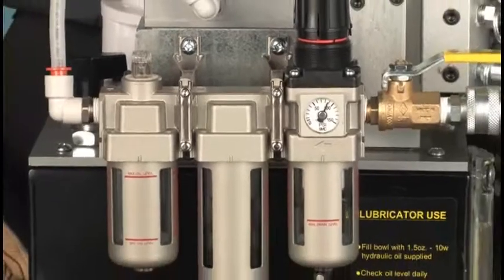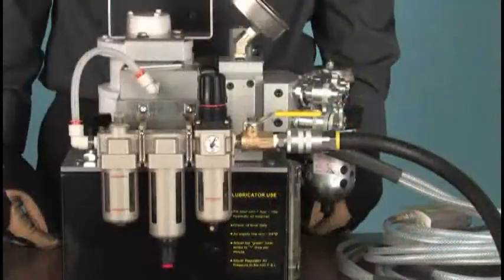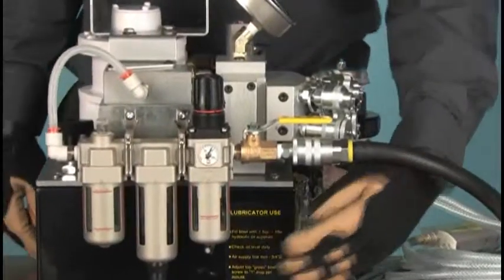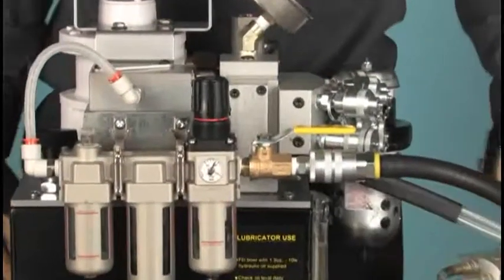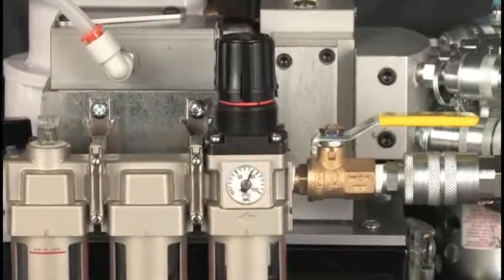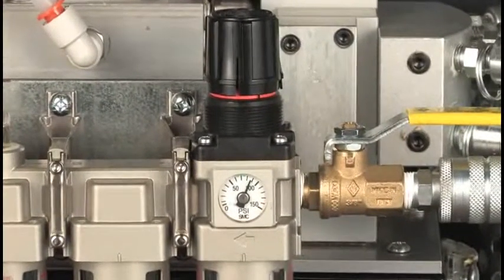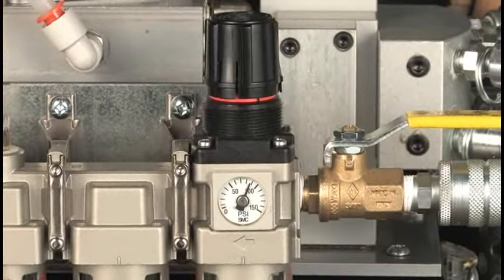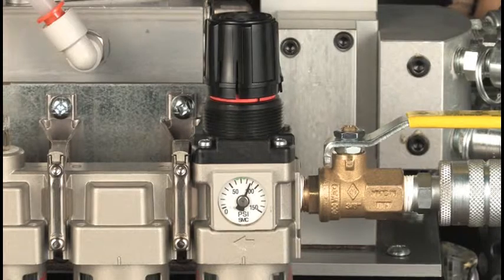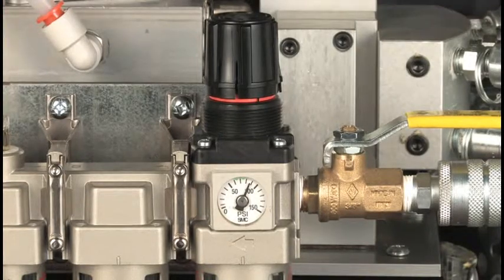The first unit after the main air valve is the pressure regulator. This is not to be confused with the regulator on the pump which controls hydraulic pressure. This one allows the operator to limit the incoming air pressure to a range from 80 to 120 PSI. About 100 PSI is usually ideal. Lift up and turn the knob on top in or out to adjust the pressure on its gauge.